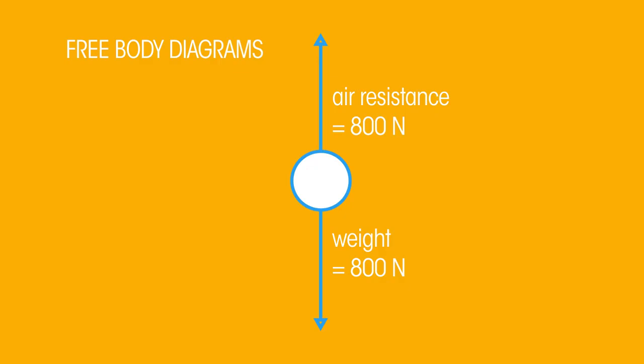In a free body diagram the object is shown as a point. The forces are drawn as arrows starting at the point. The length of the arrow indicates the magnitude of the force and the direction of the arrow shows the direction of the force.